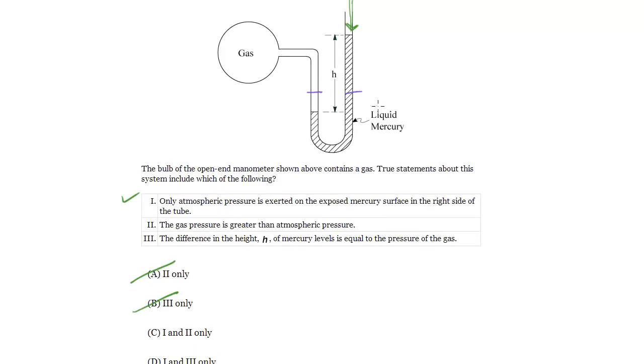This started equal, but then you put in your gas and it pushes the mercury, displaces it down and then pushes it up on this side. Eventually it equilibrates because the gas plus the atmospheric pressure on this side is going to perfectly equal out with the atmospheric pressure on this side once you've displaced it in this manner.